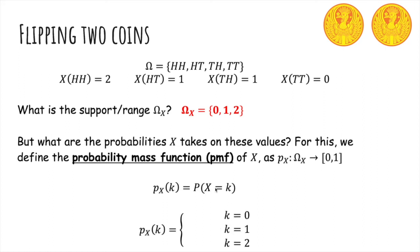So for example, the probability X equals zero is one fourth because that corresponds to this outcome. The probability X is equal to one is one half because two out of the four outcomes correspond to X equaling one. And the probability X equals two is also one fourth.